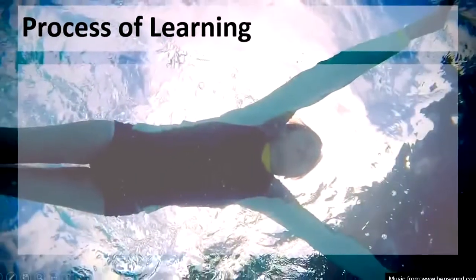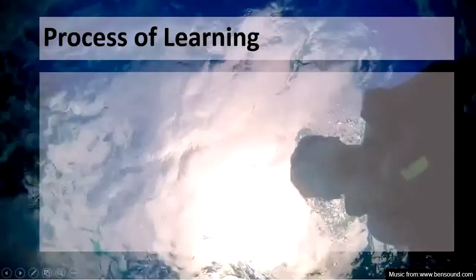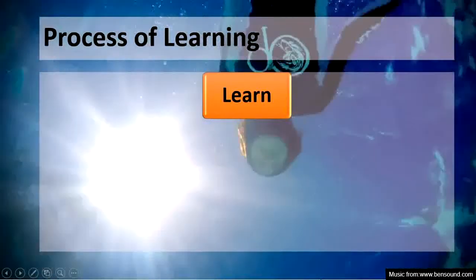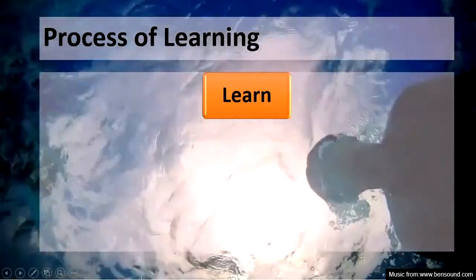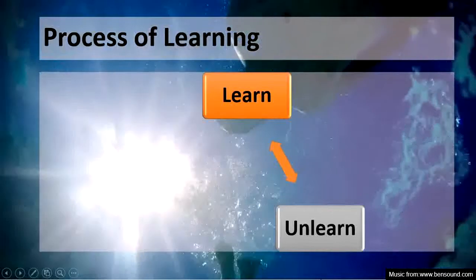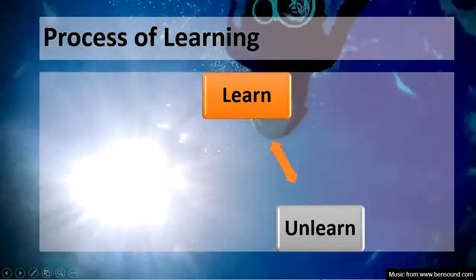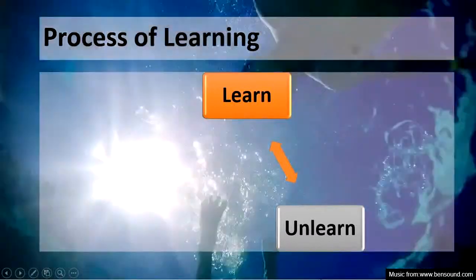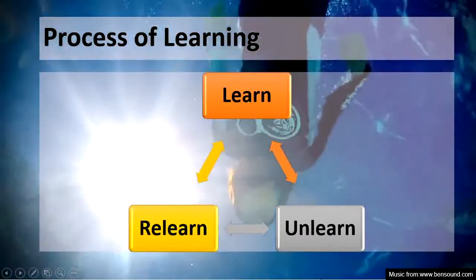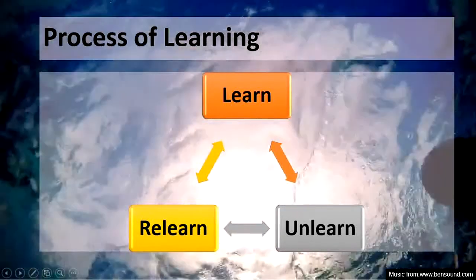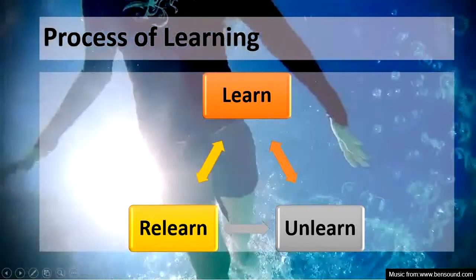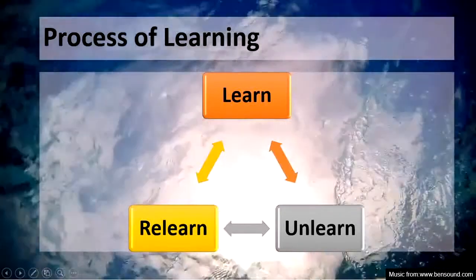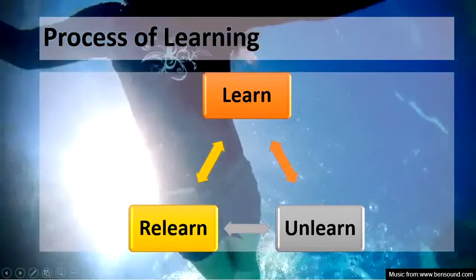So we are now sure that learning is a process. As a process, learning involves three things: when you encounter new situations you try to learn them; when your existing knowledge, experiences, or skills fail to solve a problem you unlearn them; and things you had forgotten but now realize are useful, you relearn. So learning, unlearning, and relearning go on continuously.